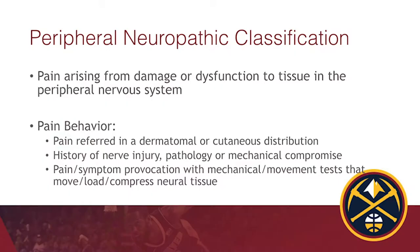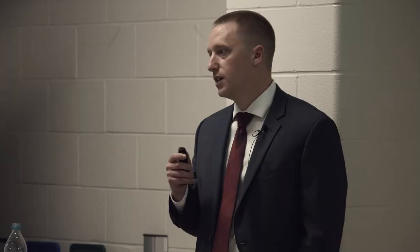The second classification is peripheral neuropathic — pain arising from damage or dysfunction of the nervous system, like a peripheral nerve injury or crush injury. This presents in a dermatomal or cutaneous distribution, much less specific than saying my bicep tendon hurts every time I flex my shoulder. You also want to assess for muscle weakness distribution that lines up with this. How we test for these is with movement provocative tests like an upper limb tension test or straight leg raise — selective tissue tensioning to tease this out.